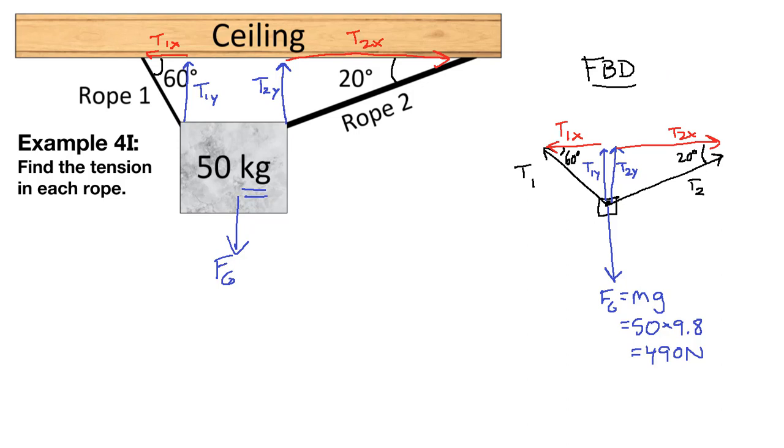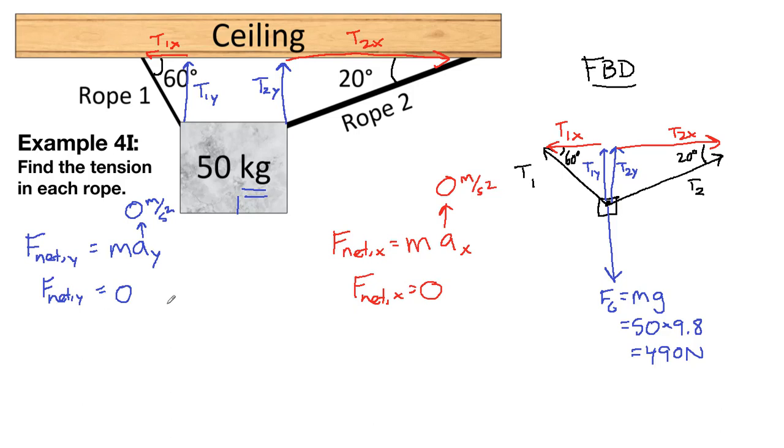We have our drawing, and now we can recognize that we're going to have to write down two separate equations. If we look at the Y component first, the key thing about these hanging rope problems is that the acceleration is 0 meters per second squared in both directions. So, if we also write down F net X equals M A X, the acceleration in that direction is also 0. We have that the net forces in the Y direction add up to 0, and we also have that the net forces in the X direction add up to 0 also. This is key to our hanging rope problems where the block itself is not moving and not accelerating.